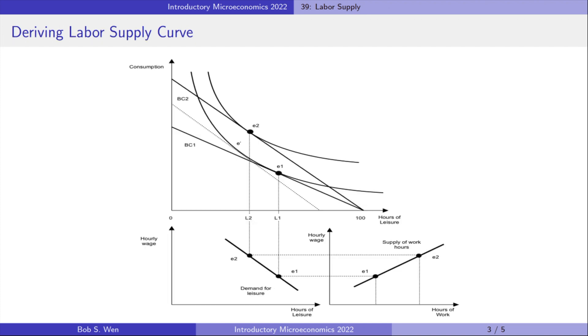We can derive the demand curve for leisure and the labor supply curve for Amy. As illustrated in the graph, as the hourly wage rises, the optimal consumption choice moves from E1 to E2. The demand for leisure decreases and the supply of hours of work increases.